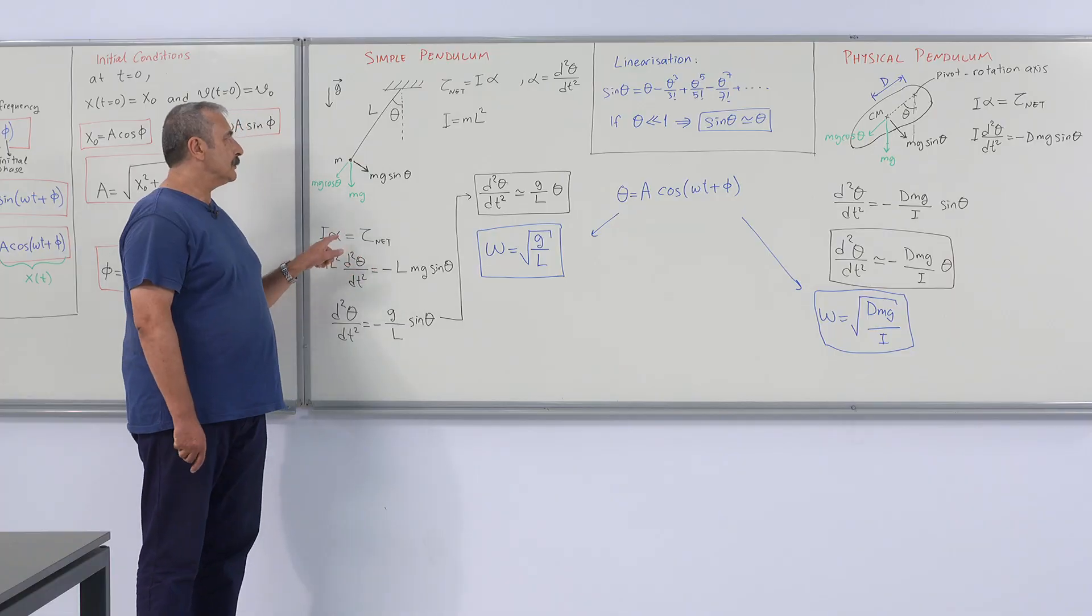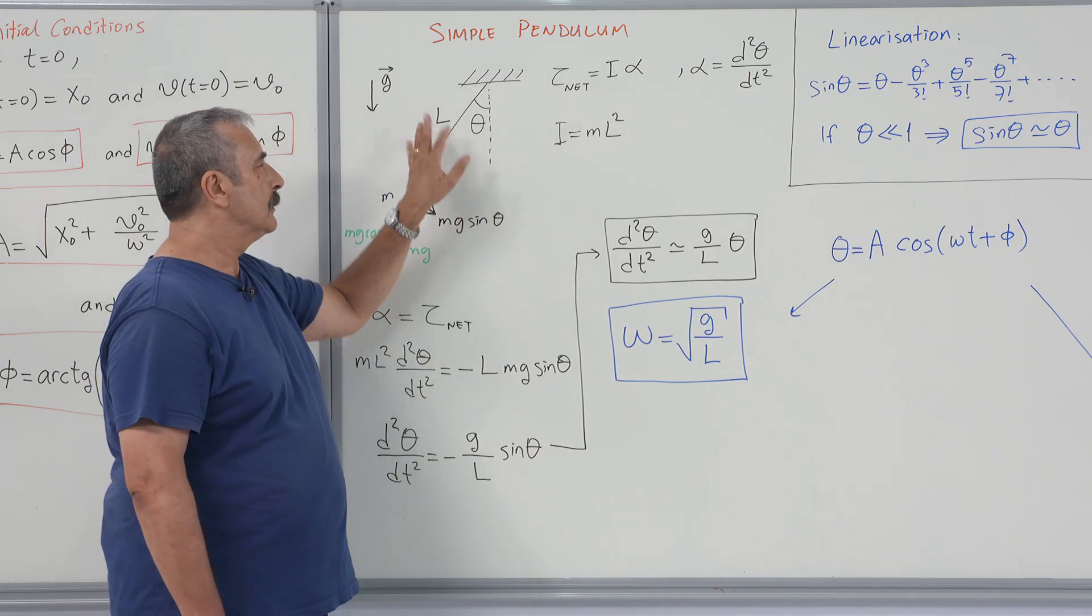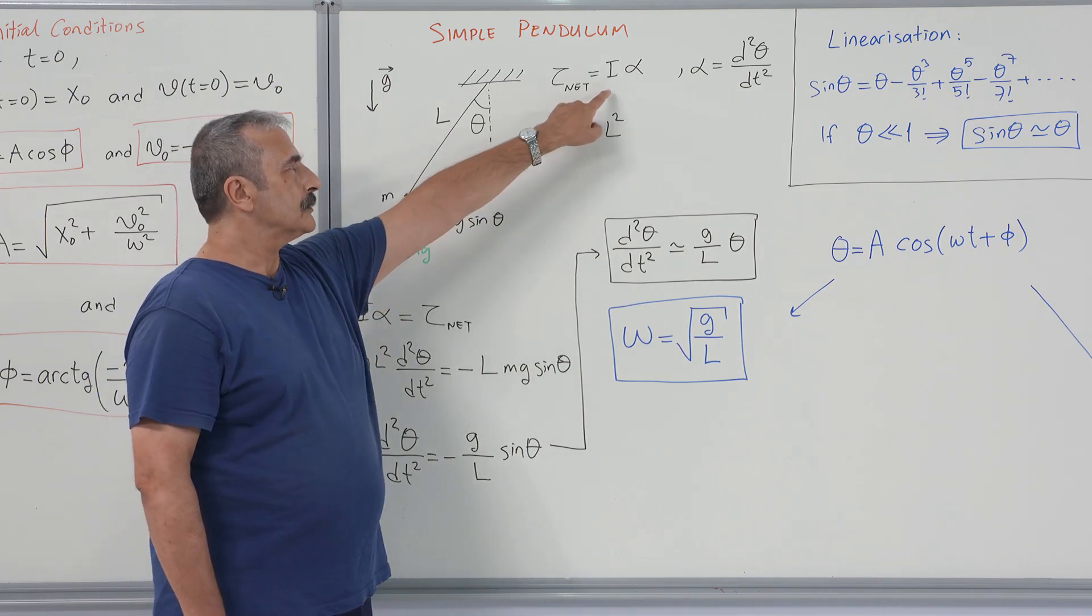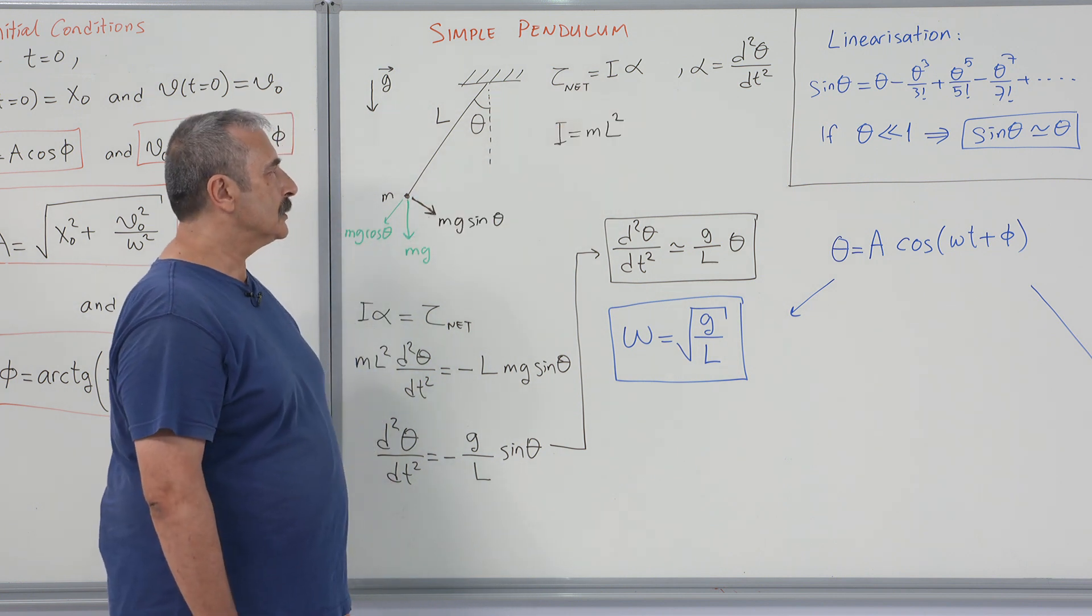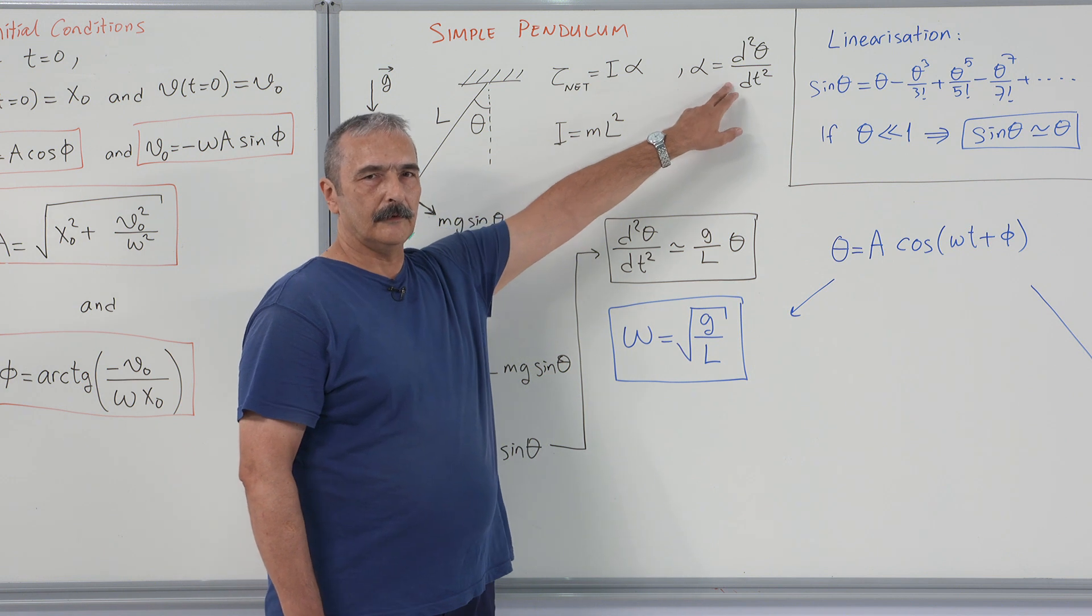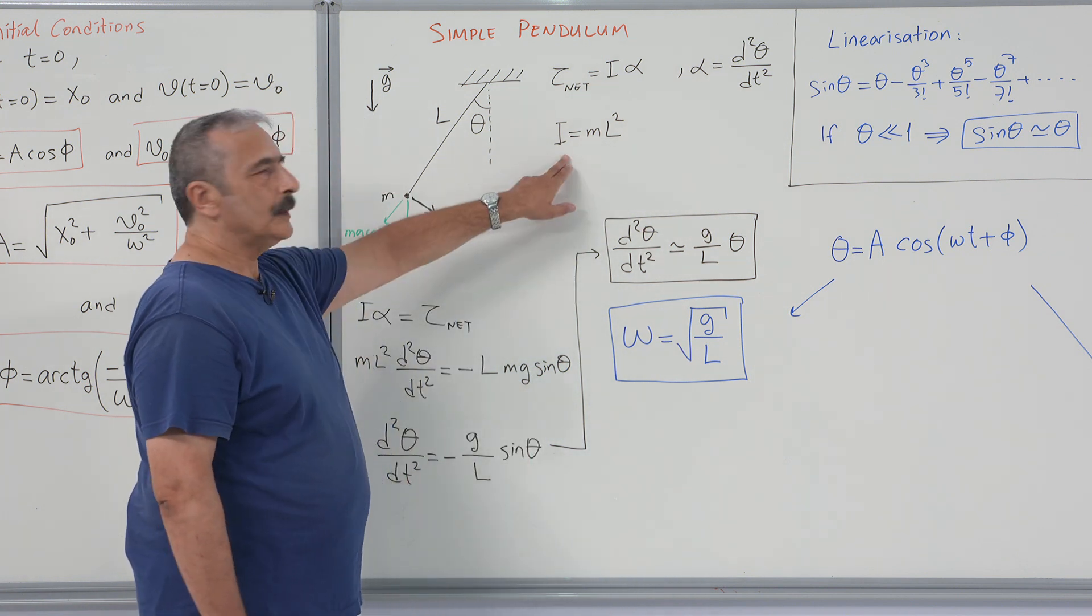Since this is a rotational motion, we must construct the torque equation, Newton's second law in another form. Torque on the system equals the moment of inertia times angular acceleration. Angular acceleration is the second time derivative of the deflection angle.